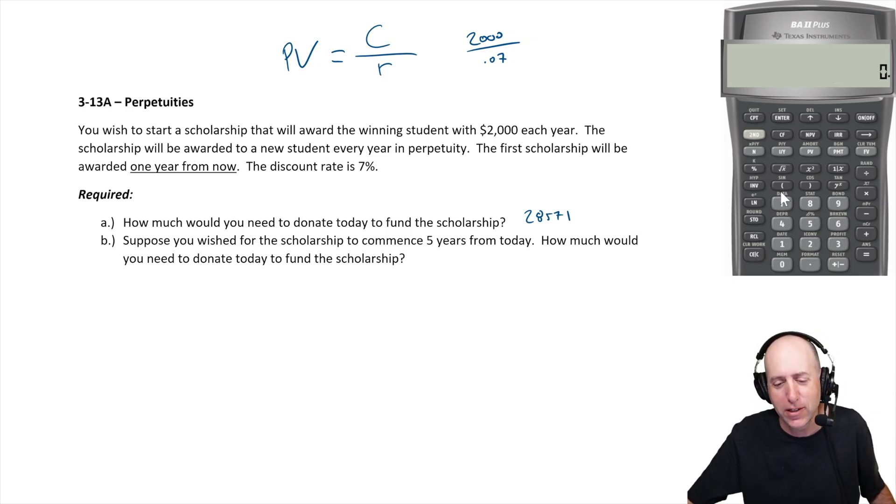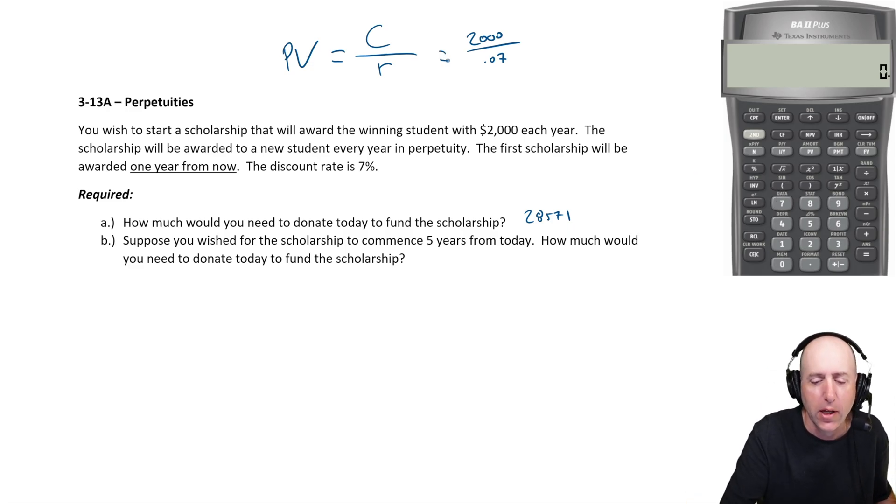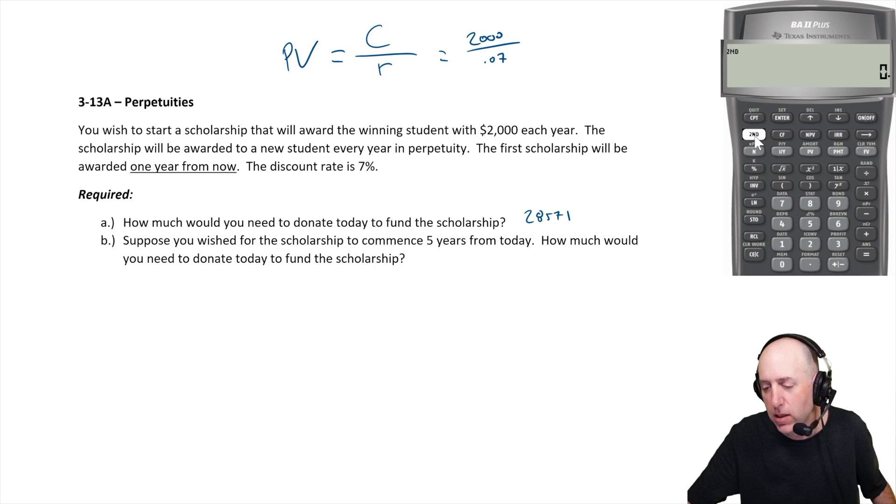Not that you'd ever want to do this, but to enter a perpetuity into a financial calculator - again the formula is so simple but I know some folks will come to rely on their financial calculators - here's how you do it. You just go two thousand as your PMT, recurring payment. You go seven as your I/Y. And, this is the tricky part, N is forever, so I just put like a billion. A billion years from now is your N.